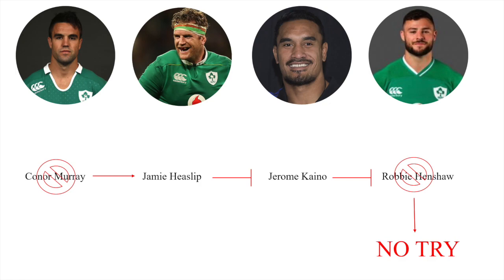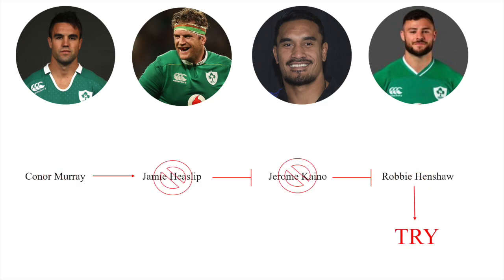Now moving on to double mutants involving two of the four players. In the first example, both Connor Murray and Robbie Henshaw are not present. Although the ball would never leave the scrum due to Murray's absence, as this involves a more downstream player, the outcome is dependent on this most downstream player, Henshaw. As Henshaw is not present to score the try, no try will be scored.